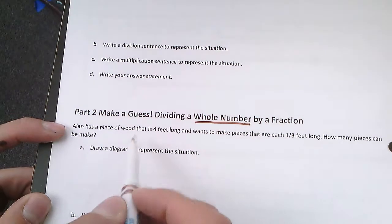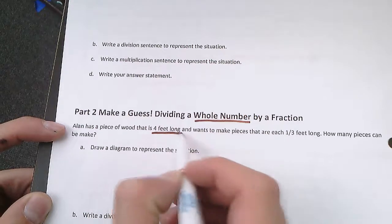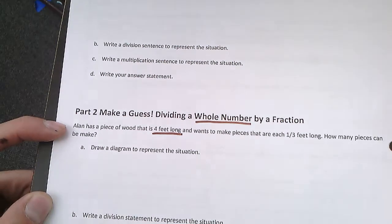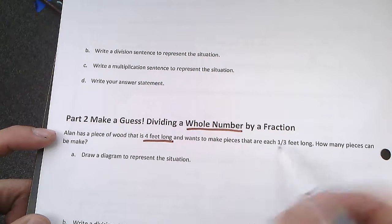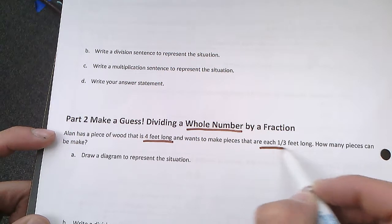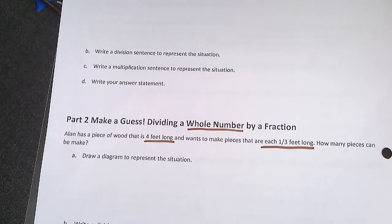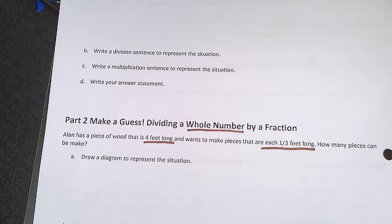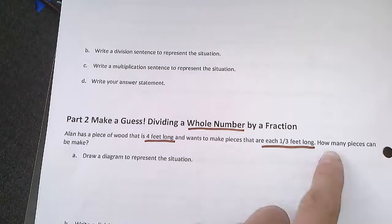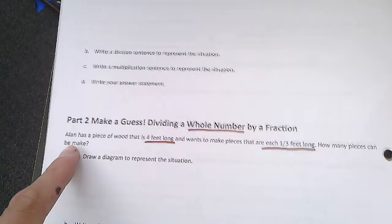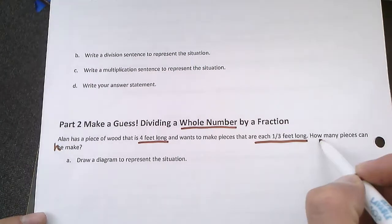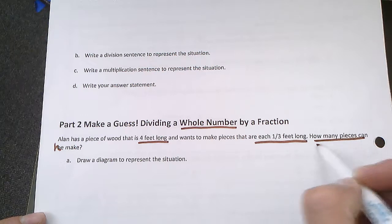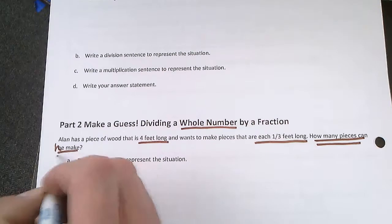So Alan has a piece of wood that is 4 feet long — that's a math clue. And he wants to make pieces that are each one-third of a foot long. How many pieces can he make? That's what it's asking us to find. Let's double underline that.